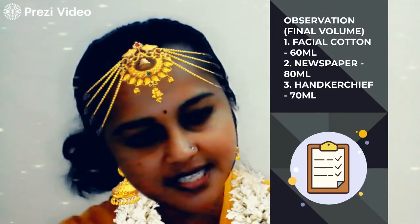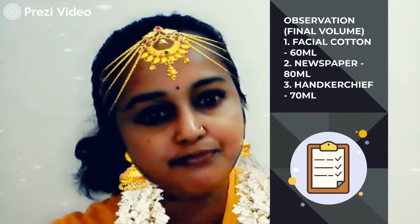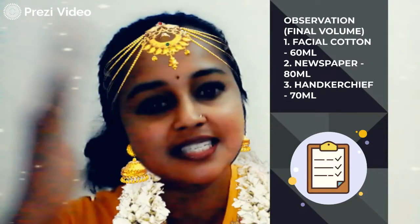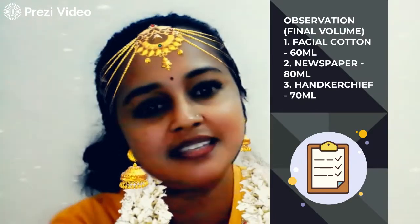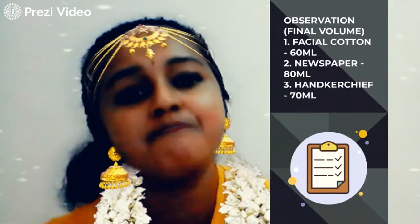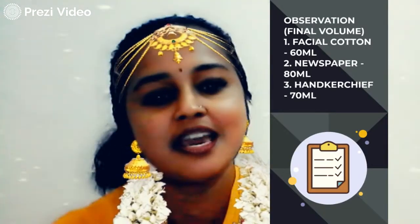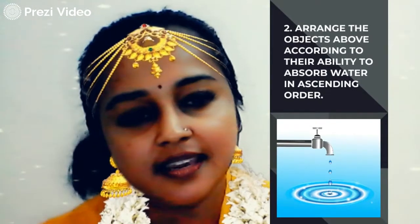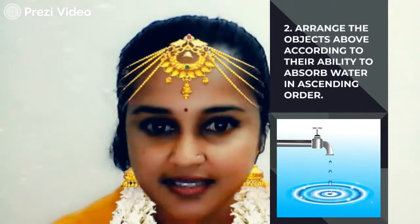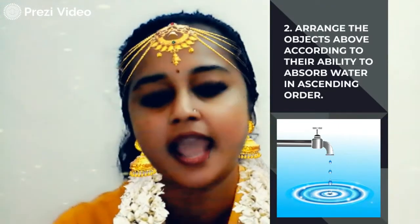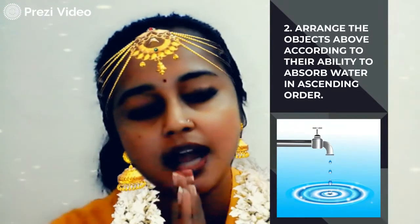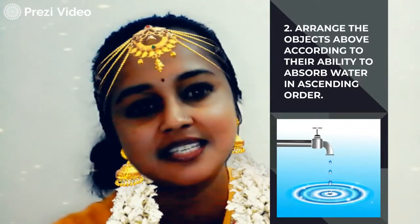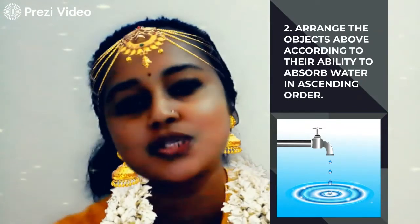Newspaper absorbed the least water, so it comes first. Second is handkerchief, followed by facial cotton, which absorbed the most water. All of these objects — newspaper, handkerchief, and facial cotton — are water absorbent. The only difference is how much water each one can absorb. That's all from me — see you all again, bye bye students!